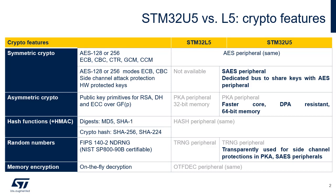Regarding Asymmetric Crypto, the public key accelerator, or PKA, is based on a faster core with DPA-resistant memory. The PKA RAM is accessed through a wider data bus — 32 bits in the STM32L5 and 64 bits in the STM32U5. The RAM size has also been increased from 3,576 bytes in the STM32L5 to 5,336 bytes in the STM32U5. A tamper detection can reset this RAM.